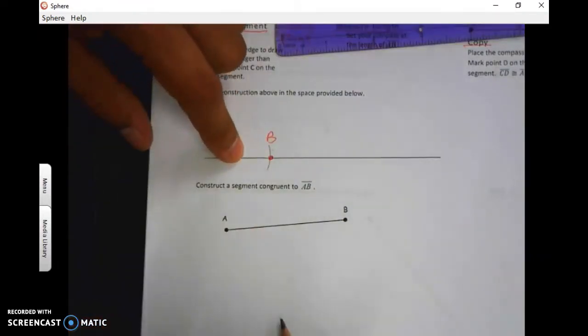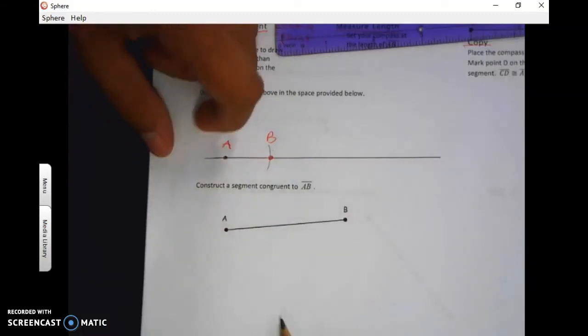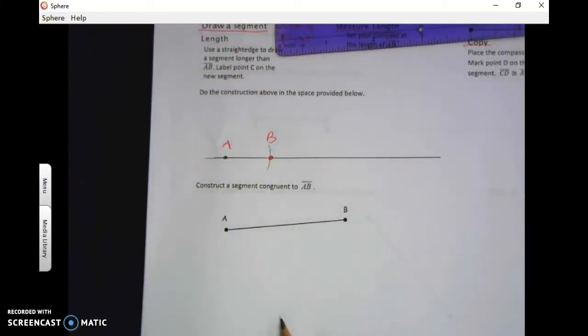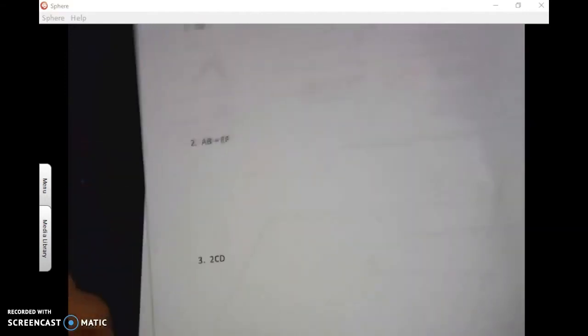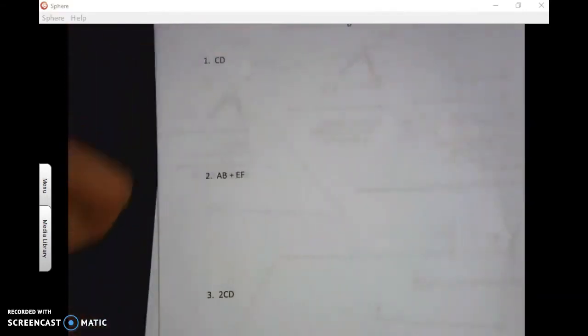When you finish that one, you want to go to the back of this page and try numbers one, two, and three. Two and three might be a little challenging, but you can do it. You just add two segments together. So go ahead and try that now. I'm going to show these three fairly quickly.